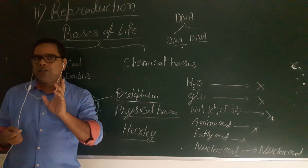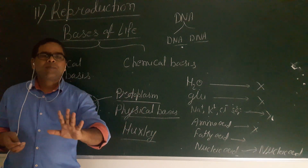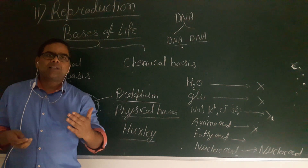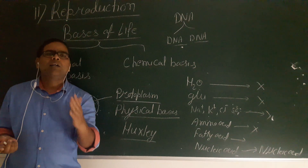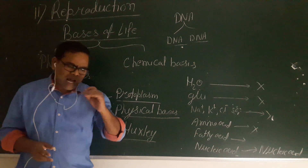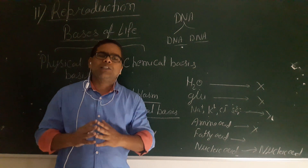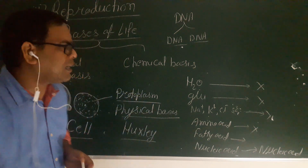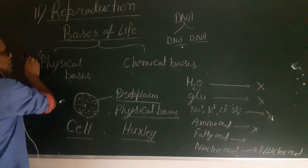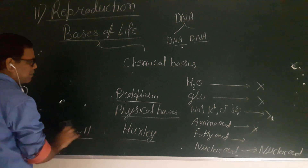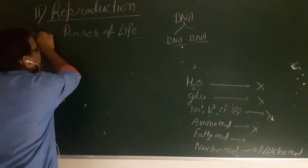So life has two bases: first, the physical basis, which is protoplasm — one of the defining characters of living organisms. Second, the chemical basis, which is nucleic acid in the form of DNA and RNA. If we consider a complete life, both bases must be present. For life to exist, both the physical basis — protoplasm — and the chemical basis — nucleic acid — must be present. Nucleic acid has two common forms: DNA and RNA.